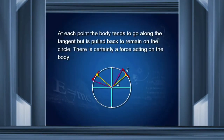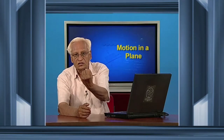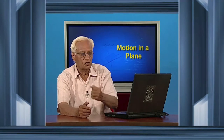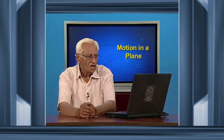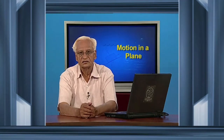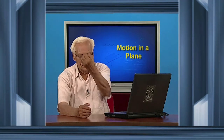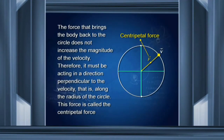There is a force acting on an object moving in a circle which is all the time pulling it towards the center of the circle. This force is called the centripetal force. The direction of the force keeping the body on a circular path is along the radius, because it has to pull the body towards the center.